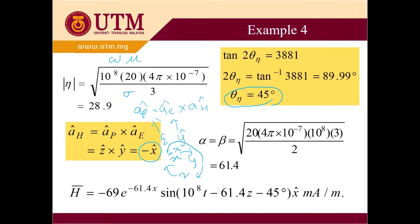And then this one is 45 degrees like we expect. But we can prove it. Because the tangent 2 theta_n equal to 3881, which is very big. So the inverse tangent is around 90 degrees. And half of it is 45 degrees. So it's proven. And alpha equal to beta equal to square root of mu omega sigma divided by 2. So you get 61.4.